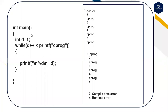This is the third question. In main, int d is equal to 1. Inside the while loop condition: d post-increment less than printf of 'C program', and inside the while loop I'm trying to print the value of d. The first option is: C program 2, C program 3, C program 4, C program 5. The third option is compile time error, and the fourth is runtime error. Predict the output of this code.